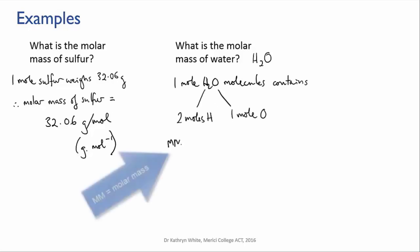This means that we can work out the molar mass of water by adding together the molar masses of the atoms that make it up. So to work this out, we need the values for the molar mass of oxygen and the molar mass of hydrogen.